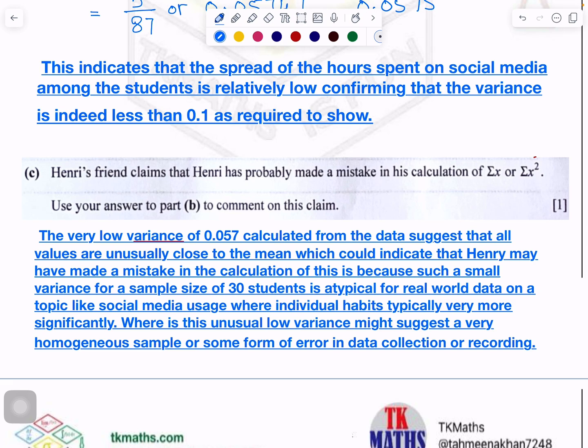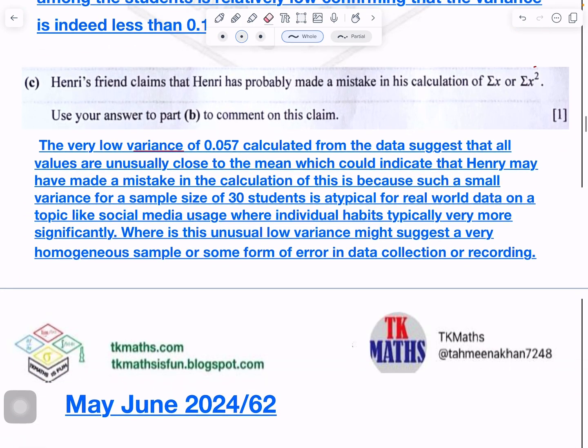What does it mean? I have tried to explain here in detail. You don't need to write too much detail, but comment means you have to explain it properly at the same time. The very low variance, which is 0.0575, calculated from the data suggests that all the values are usually close to the mean, right? Variance shows the spread of the data. If it is very small, it means there is not much spread of the data. It is very close to the mean, which indicates that Henry may have made a mistake in the calculation. Because such a small variance for a sample size of 30 students is atypical for real world, unique and irregular for any real world data on a topic like social media usage, where individual habits typically vary more significantly. Where this unusual low variance might suggest a very homogeneous sample. Based on this real world situation, we think he has made a mistake.